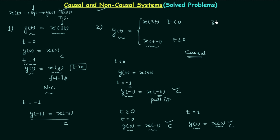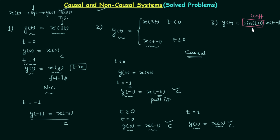Now let's move to the third problem. The output y(t) is equal to sin(t+1) multiplied by x(t-1). This problem is not difficult. We have already discussed that sin(t+1) is a coefficient and we don't have to worry about the t+1 there — if you focused on that, you might say the system is non-causal because t+1 would give future values. But since t+1 is in the coefficient, we only need to focus on the input x(t-1).